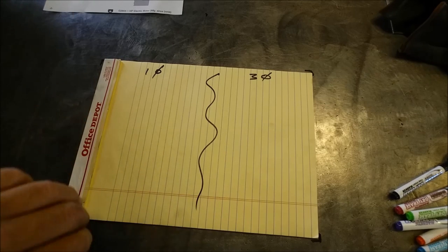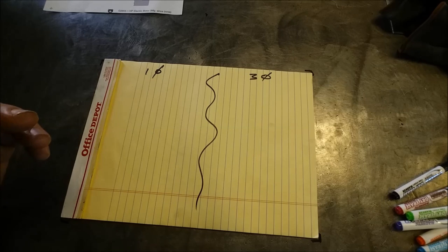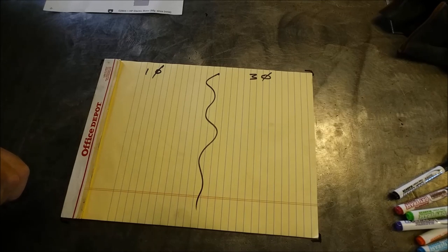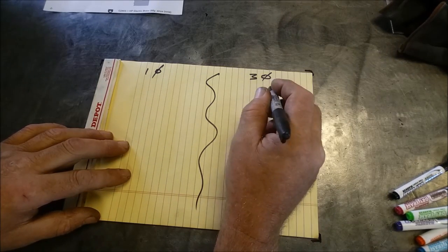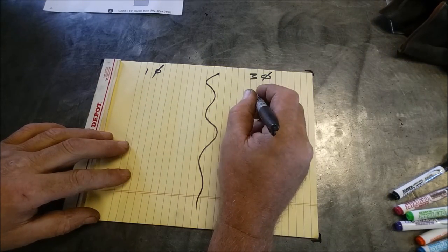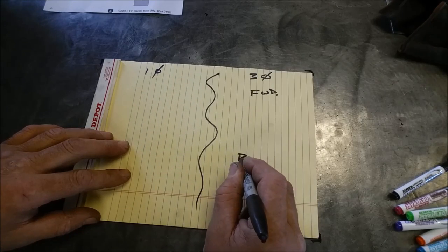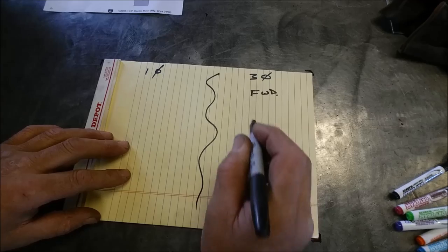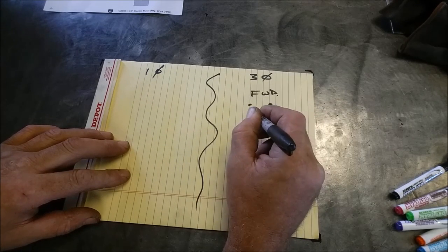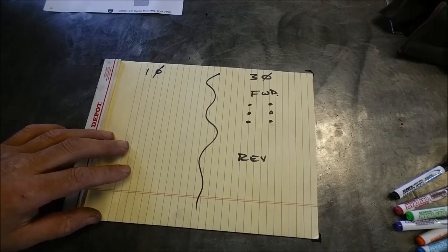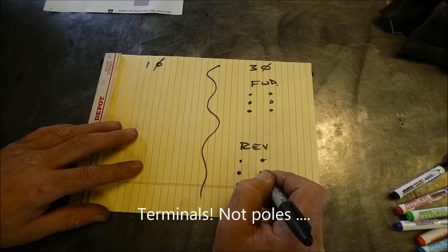On drum switches you have to look at the pole position very carefully. The three-phase ones are real simple. We're going to do a forward and reverse drum switch and each one of them has six poles.